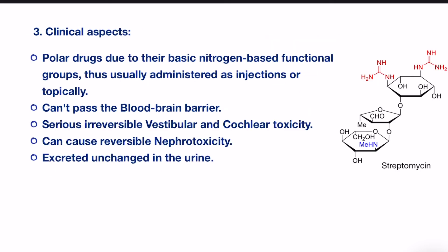Lastly, there are the clinical aspects. Aminoglycosides are polar hydrophilic drugs because of their amine and guanidine groups, as seen in streptomycin's chemical structure. Therefore, they cannot pass through biological membranes and are not well absorbed from the intestine, so they are usually given as IV, intramuscular, or topical. They are also unable to cross the blood-brain barrier and cannot be used to treat meningitis unless injected directly into the CNS.